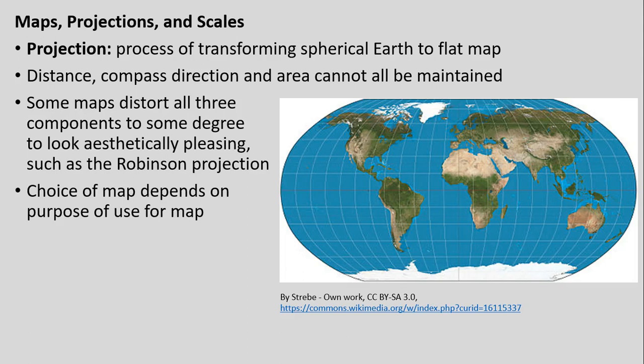Some maps, like the Robinson projection shown here, may distort all three components — distance, direction, and area — to some lesser degree to come to a compromise, and these may simply be used because they are more aesthetically pleasing in how we think of the earth being shaped. The choice of map really comes down to the purpose that geographers or others are using it for.